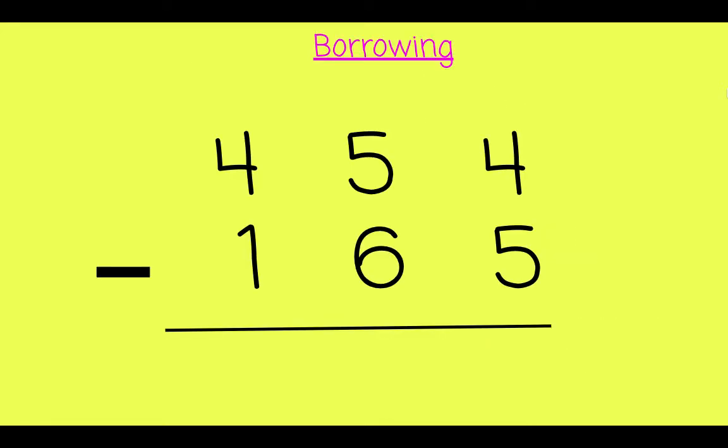Sometimes you need to borrow twice, like in this example. 4 take away 5. 5 is greater than 4, so we need to borrow. Good. 14 take away 5 is 9.